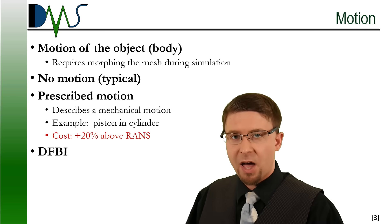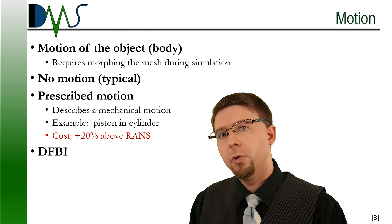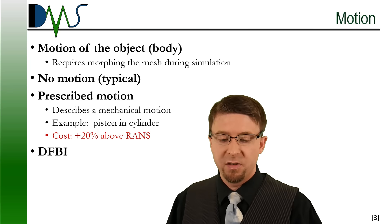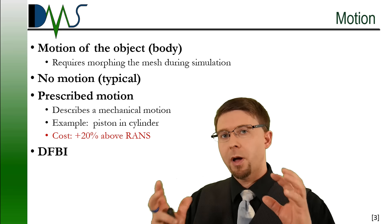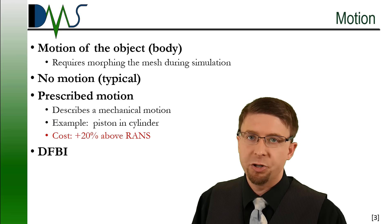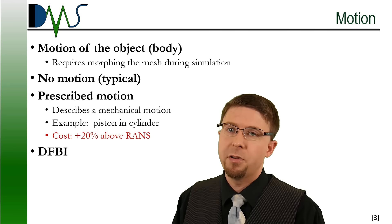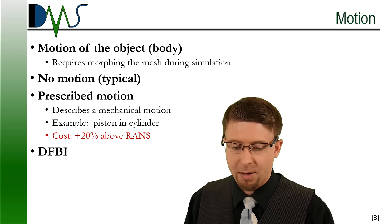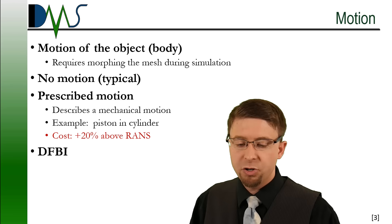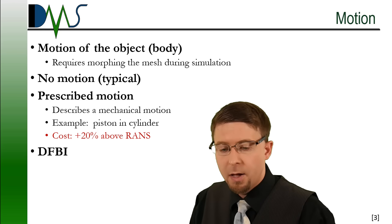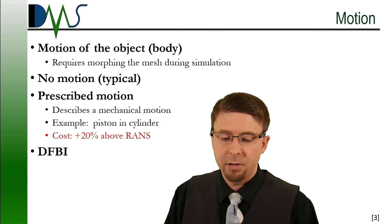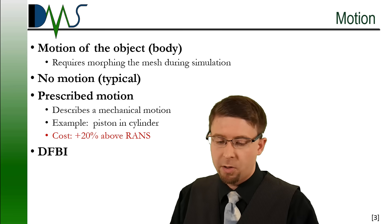The last thing you can add is motion to your body or object. This requires morphing the mesh of the simulation — the mesh being what we put around our object to define the fluid around the body. The cheapest option is no motion. The next is prescribed motion, where you're describing a mechanical motion you actually know, and you tell the simulation. It's not too bad in terms of stability, but it still adds a fair amount to the cost — about 20% extra.